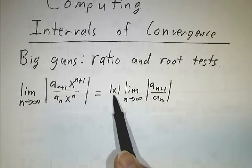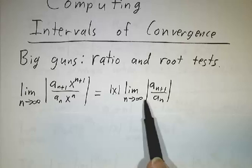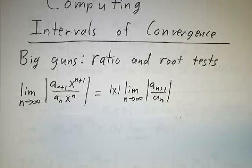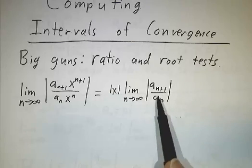So you really are just looking at the size of x times the limit of a_n+1 over a_n. So if you can figure out this limit, you're golden.